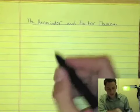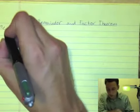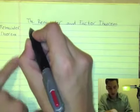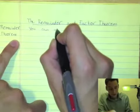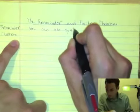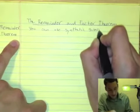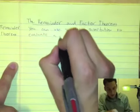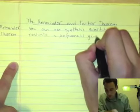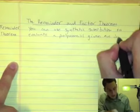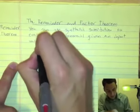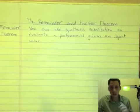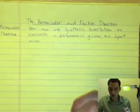So we're going to start off with a theorem. Remainder Theorem. In the terms that I've decided to tell you guys, this is what it is. You can use synthetic substitution to evaluate a polynomial given an input value. So what this theorem is saying is you can use synthetic division to evaluate a polynomial rather than plugging in the number and simplifying. It's just another way to evaluate a polynomial.